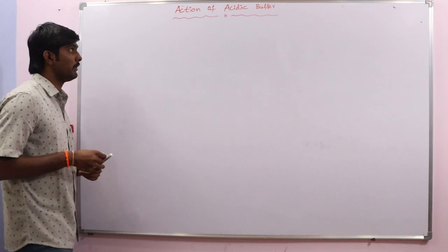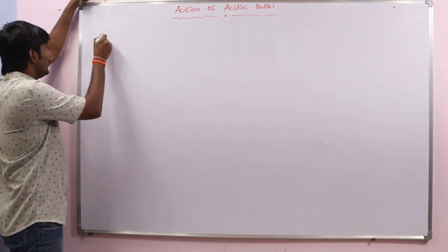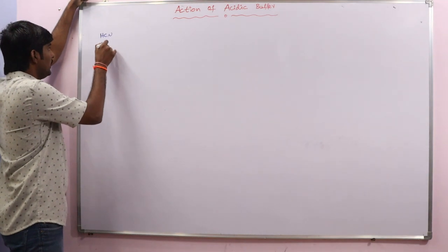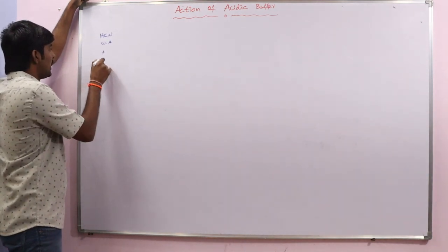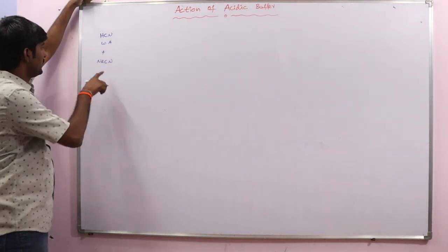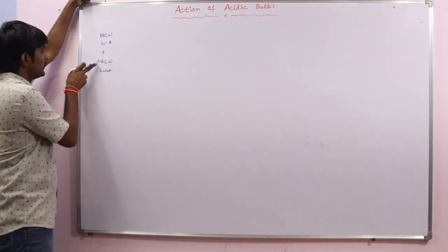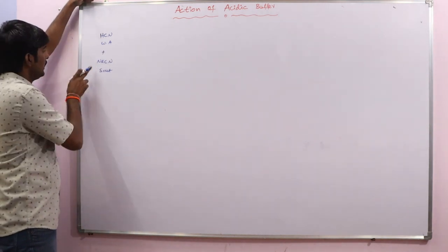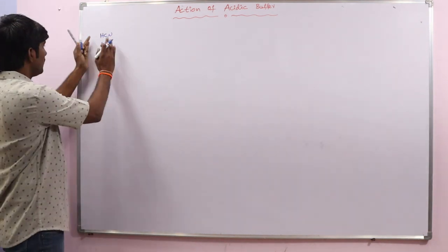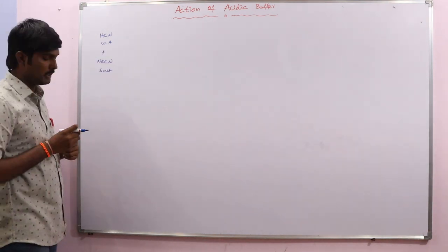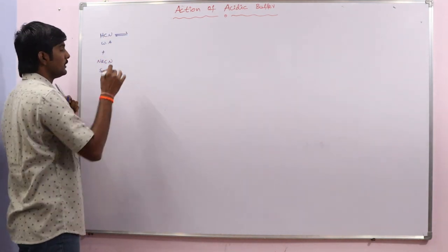Let us take an example of an acidic buffer. An acidic buffer consists of a weak acid — let us take HCN — plus its salt formed with a strong base, NaCN, which is sodium cyanide. So this mixture is considered as an acidic buffer.